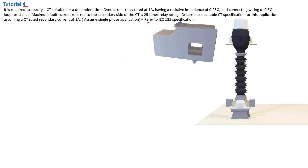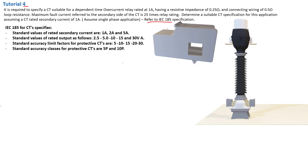We need to solve this circuit according to the IEC 185 specification. The IEC 185 specification states that standard values of rated secondary current are either 1 amp, 2 amps, or 5 amps — nothing in between. That's how manufacturers design these current transformers. We also have standard values of rated output, which is the CT burden in volt-ampere, ranging from 2.5 up to 30 VA.